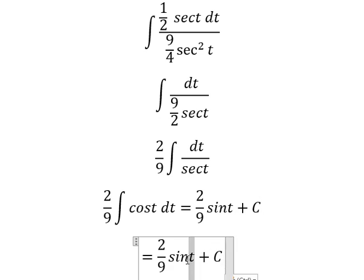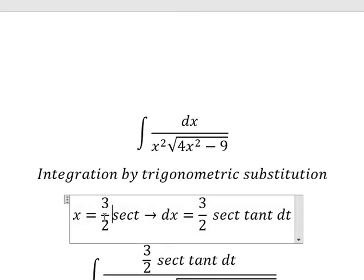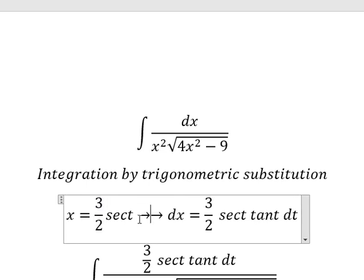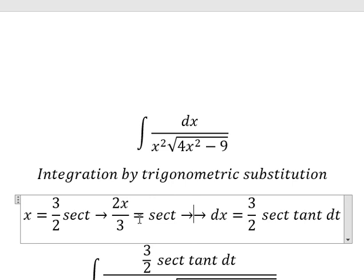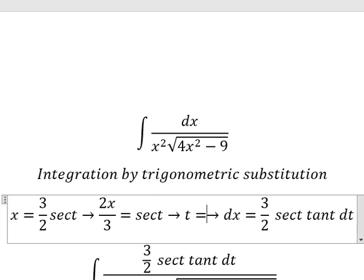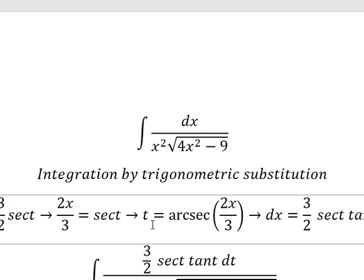For t, that is this one. So we divide both sides by 3 over 2. So you got t equal to arc secant of 2x over 3 and later we put this one to change for t.